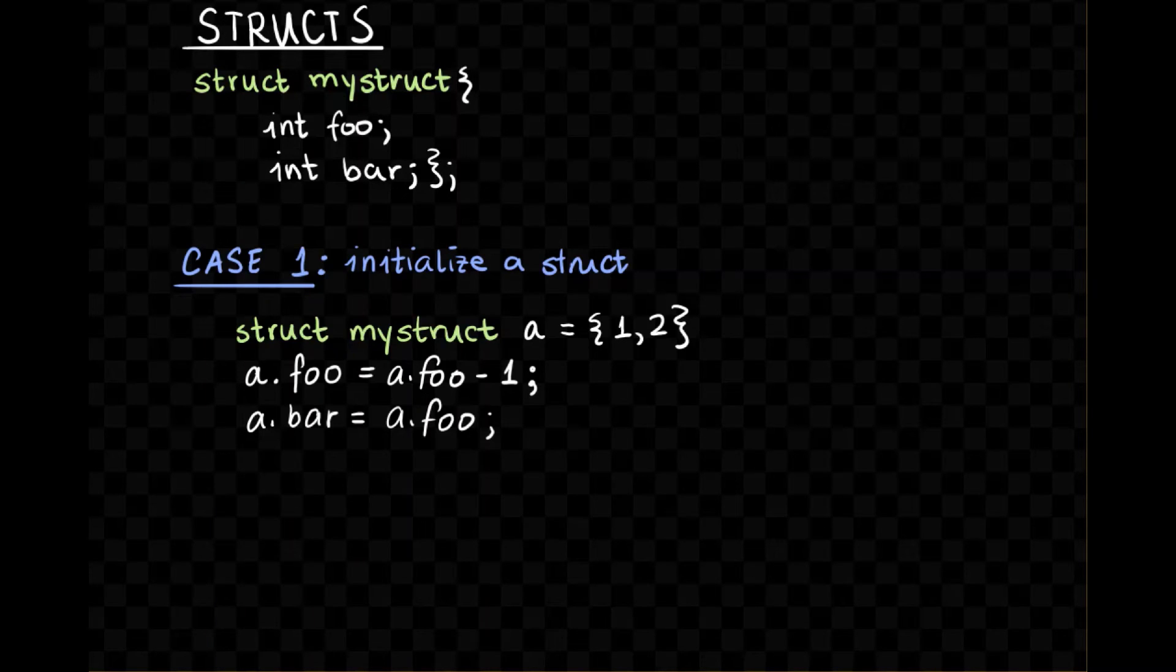The first case is if I initialize a struct, so struct mystruct a, and I set its members to 1 and 2. So in this case here, we've got foo is 1, and bar is 2. Now the way that we then access foo and bar when we initialize this way is we have to access it using this dot, a.foo. This stuff on the right hand side is not actually important, but you see that we access using the dot operator.